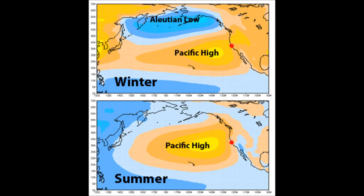In the winter, the Pacific High moves south, allowing the Pacific North low pressure storms to migrate southward, bringing rain, snow, and cold.